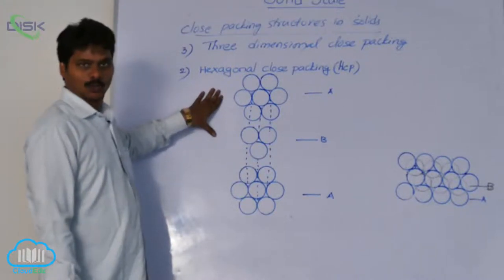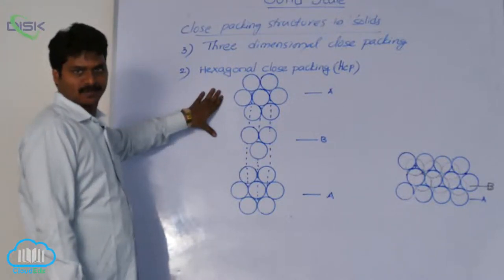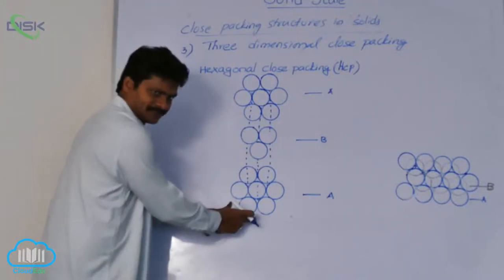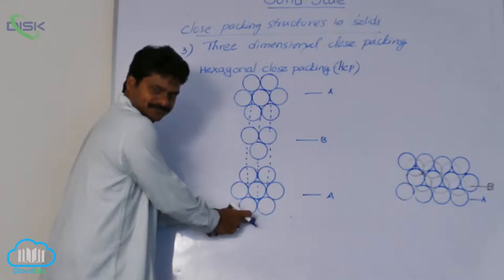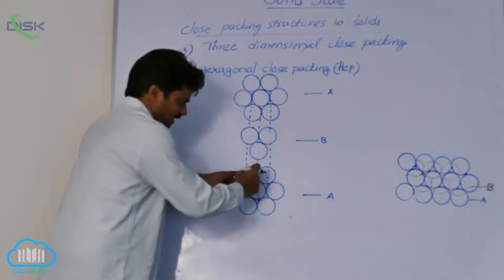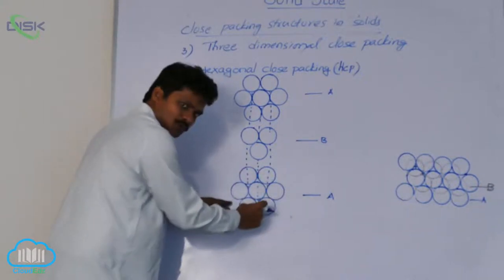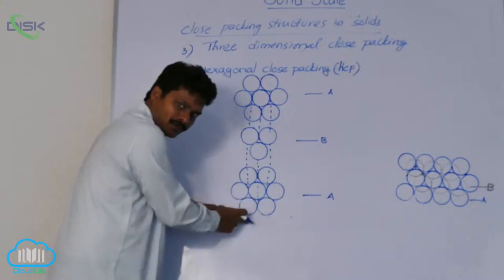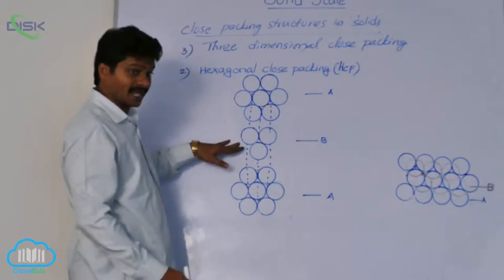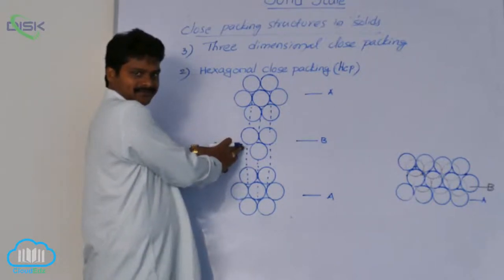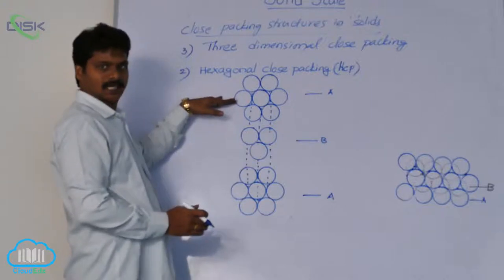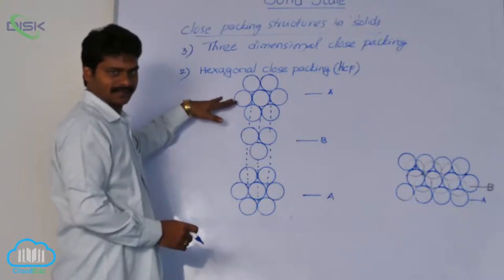This is a hexagonal close packed structure in three dimensions. This is the first layer, which is a hexagonal close packed layer in two dimensions. This is another hexagonal close packed layer — the second layer. And this is the third hexagonal close packed layer.